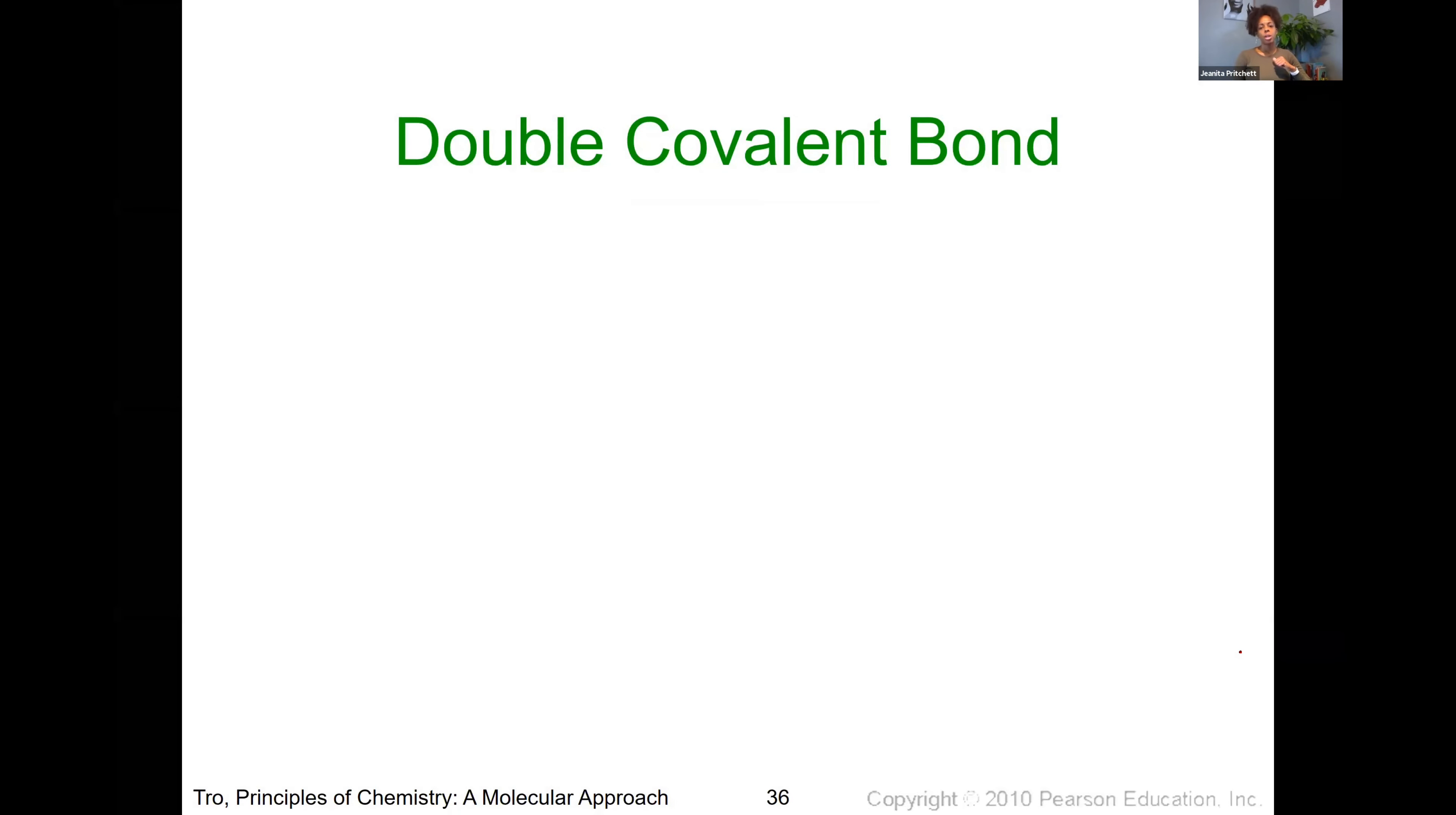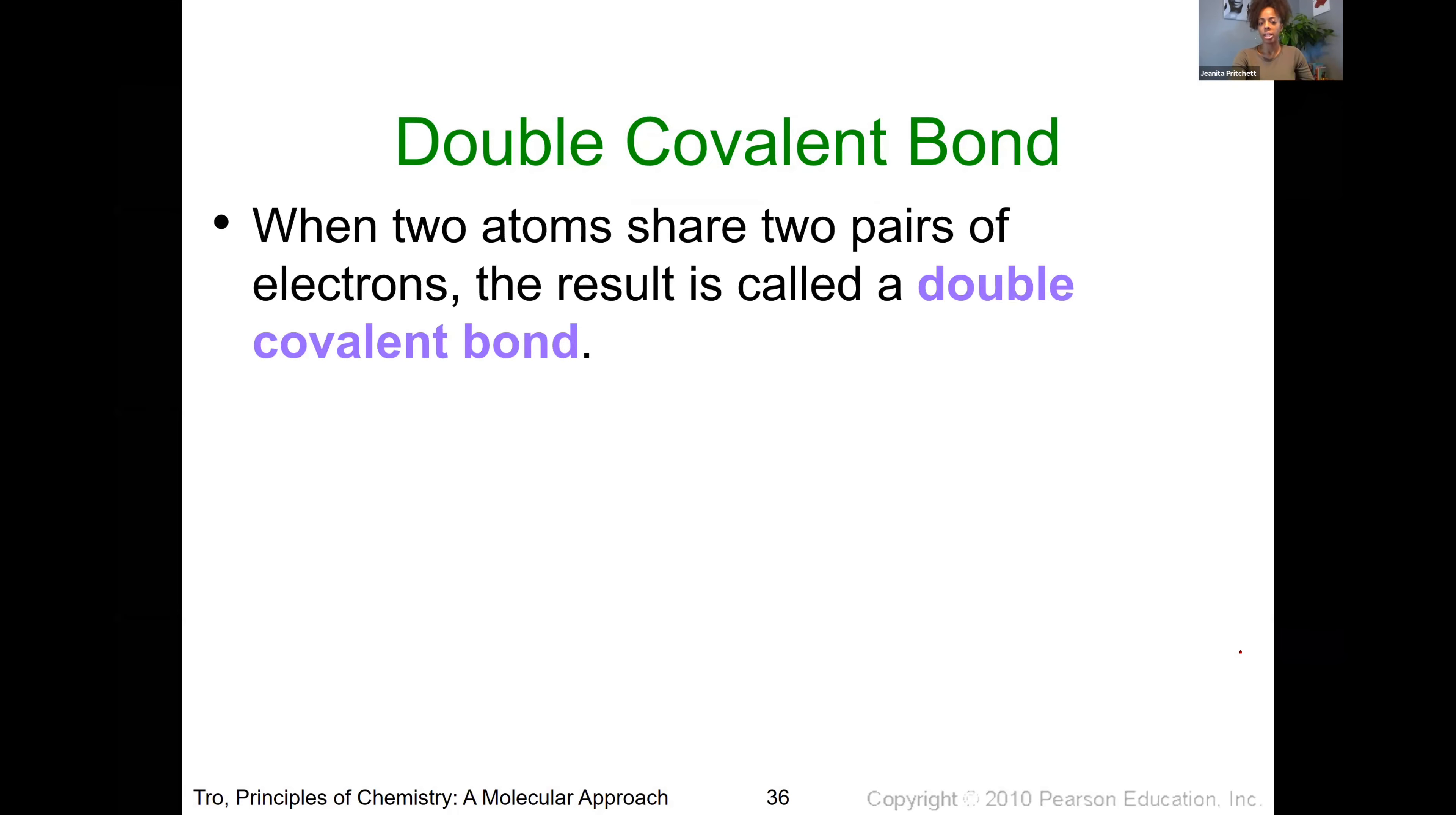So we talked about single bonds. The next type of bonding that we can have is a double covalent bond. So the word double should indicate that, well, that's twice as many as the single. And so in a double covalent bond, you now have two sets of connecting points between two different atoms. Each of those require two electrons. So that means a double covalent bond overall involves four electrons.